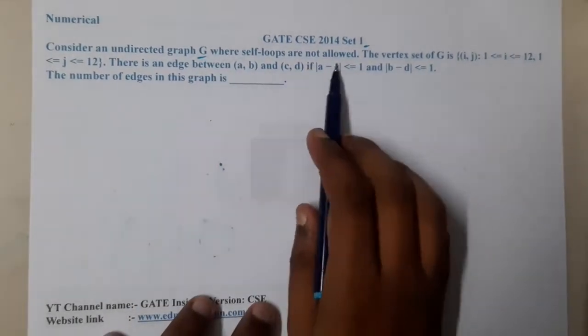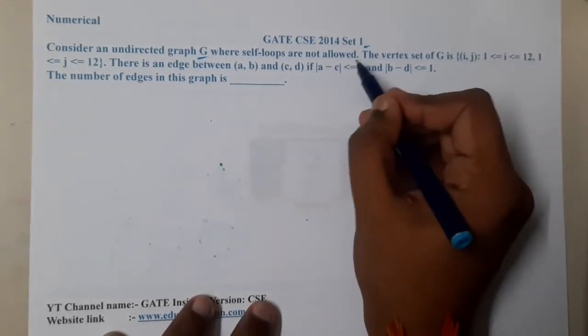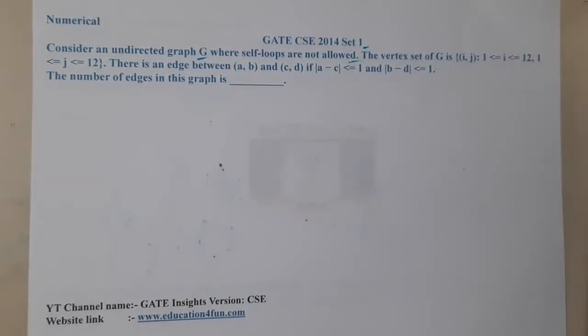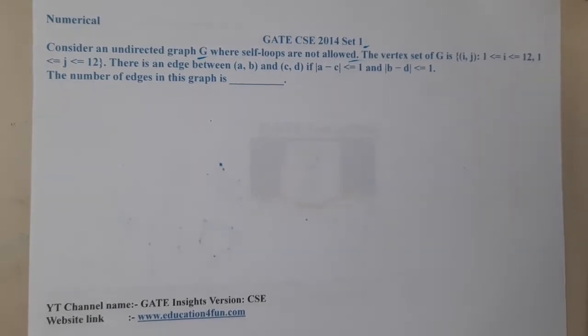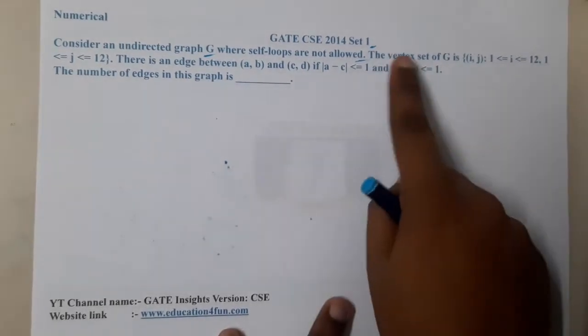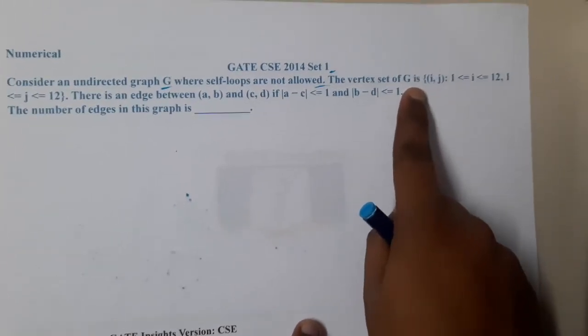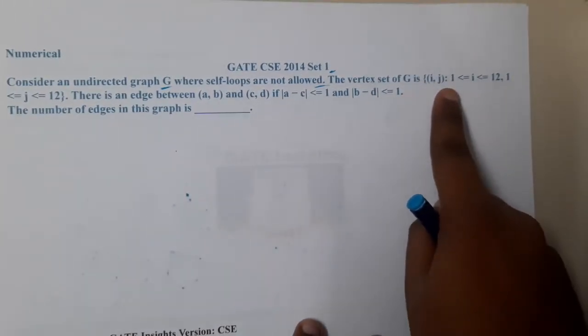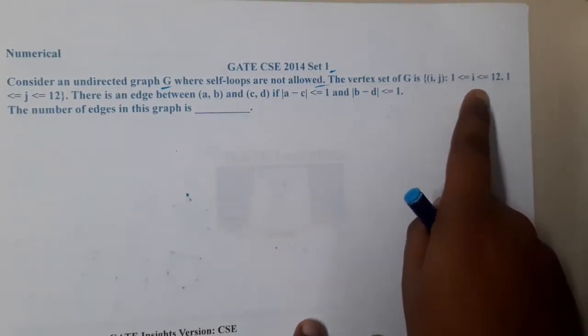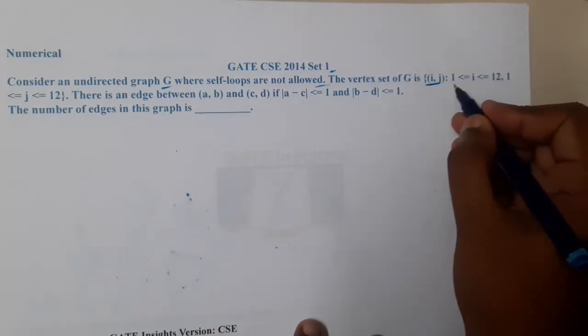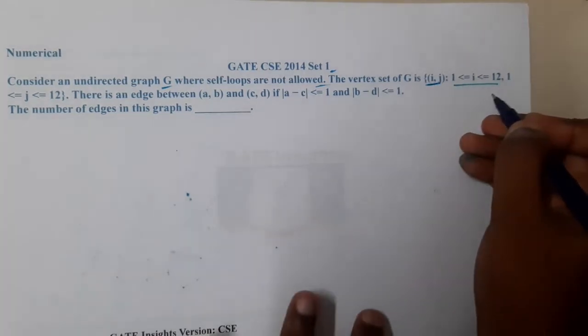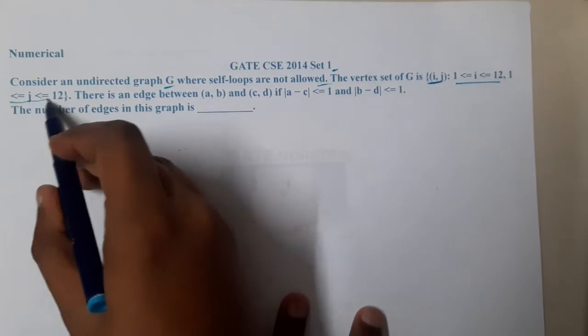They are not going to allow any kind of self-loop. The vertex set of G is {(i,j): 1 ≤ i ≤ 12}. So if the set is (i,j), the value of i should range from 1 to 12 and the value of j will also range from 1 to 12.